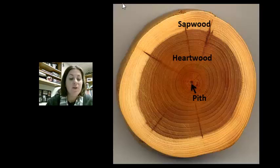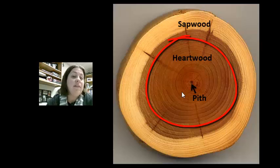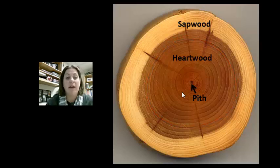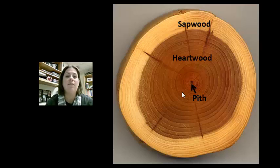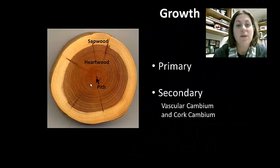Secondary growth in trees also creates growth rings. Each ring represents one year; wider rings indicate a good year of plant growth, while rings closer together indicate poor conditions such as drought or disease. These growth rings help us calculate the age of the tree and understand environmental factors affecting growth.